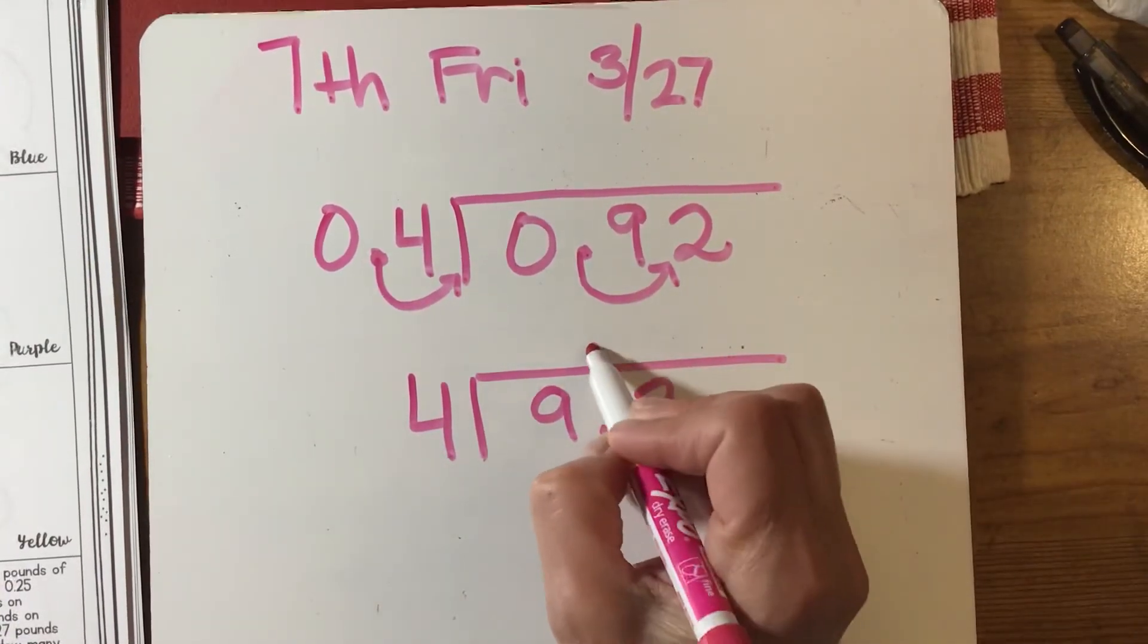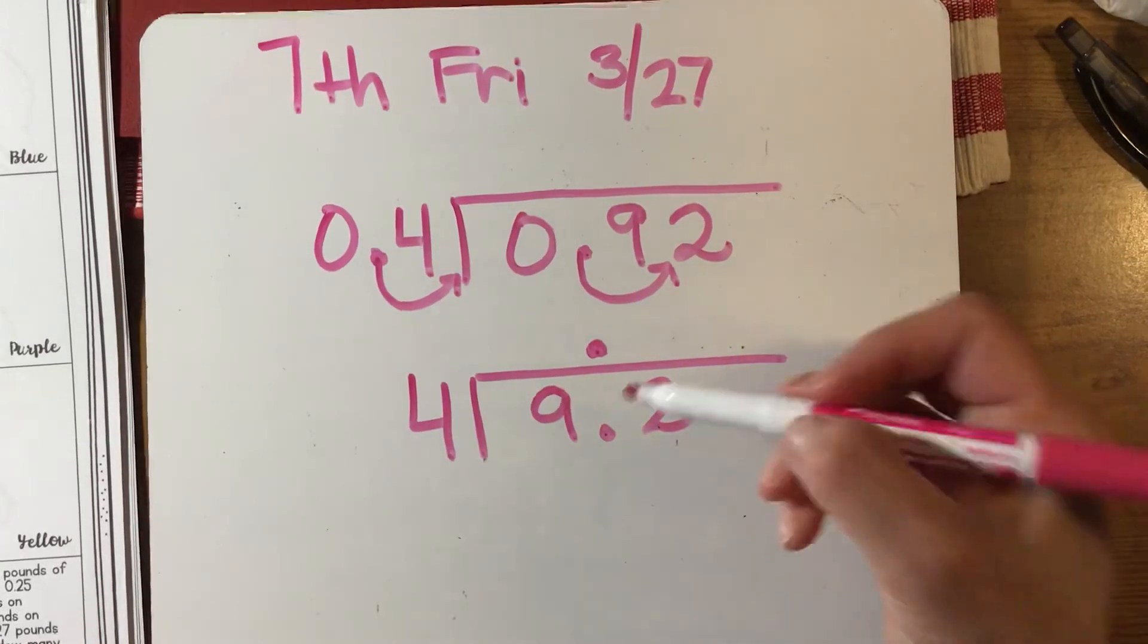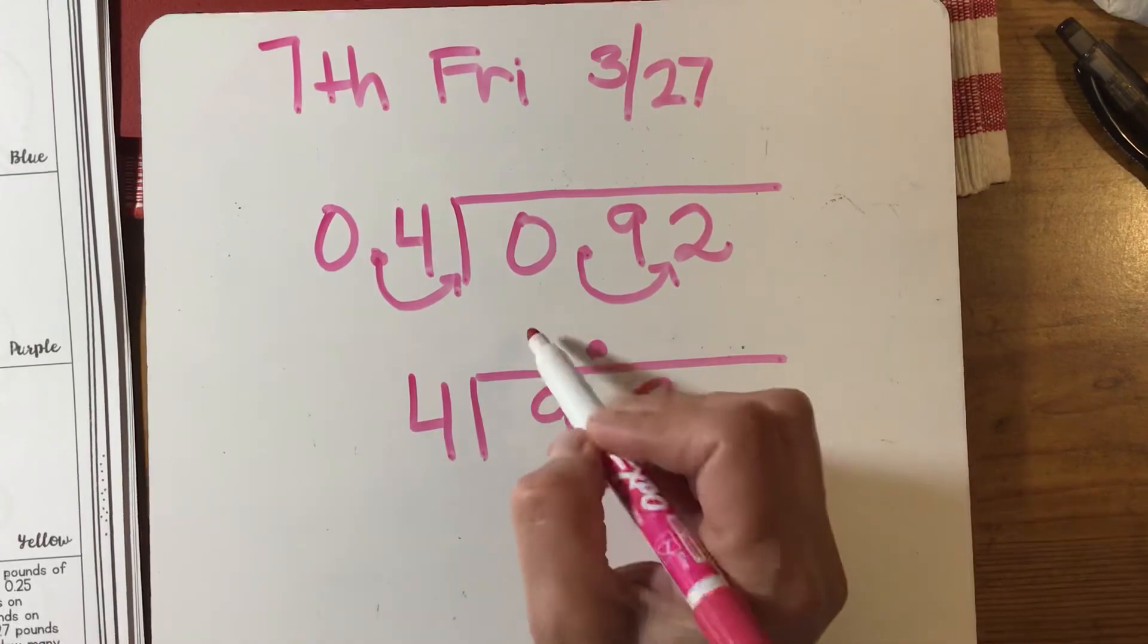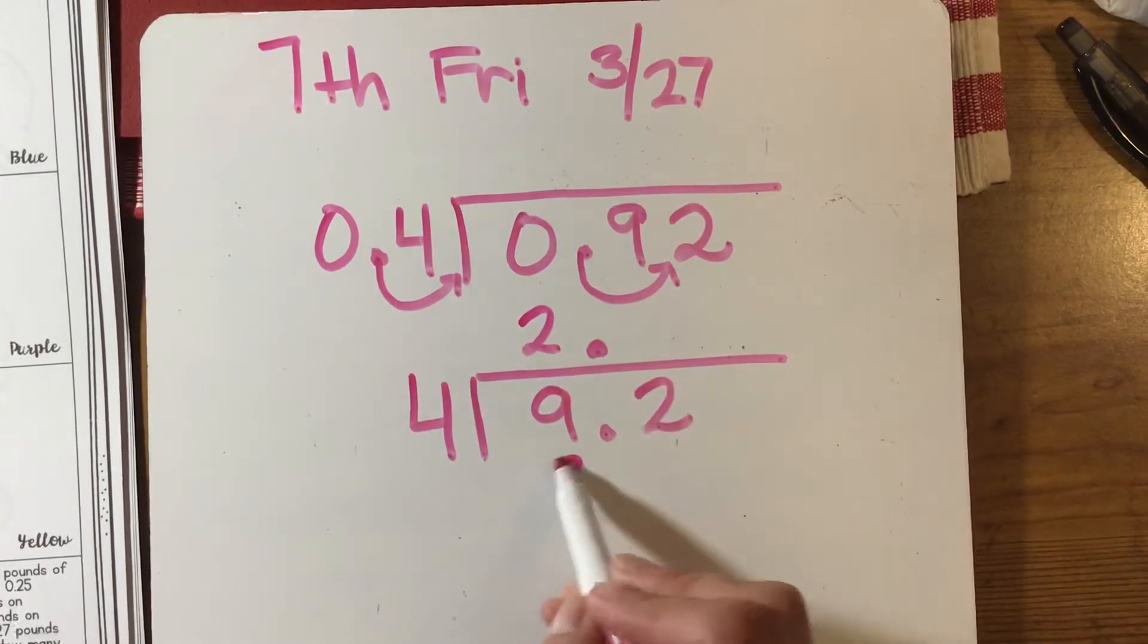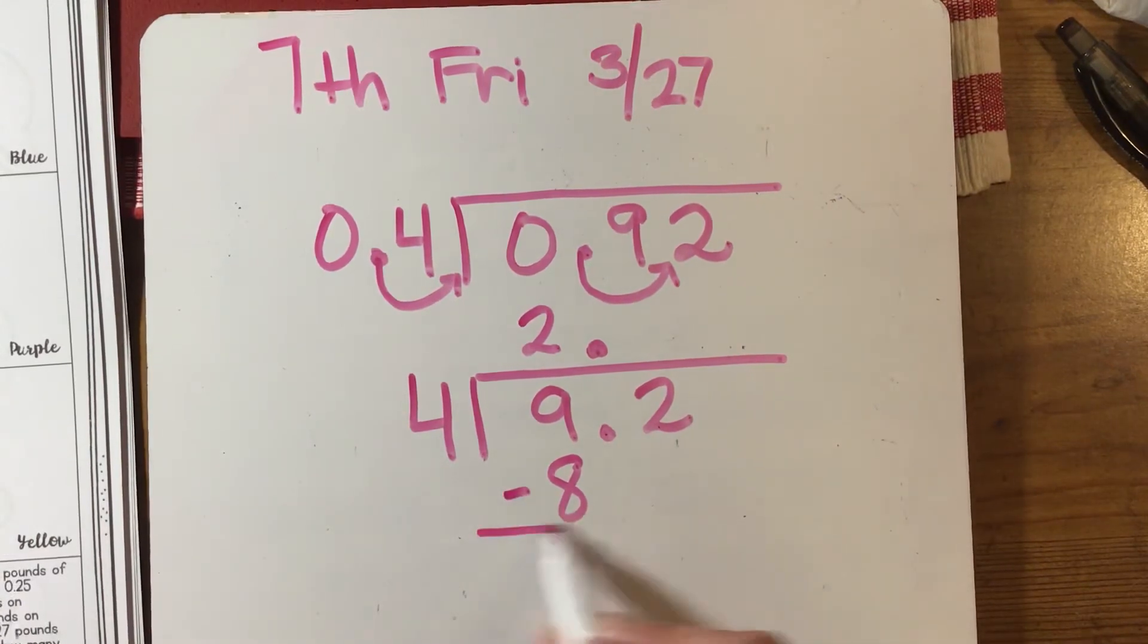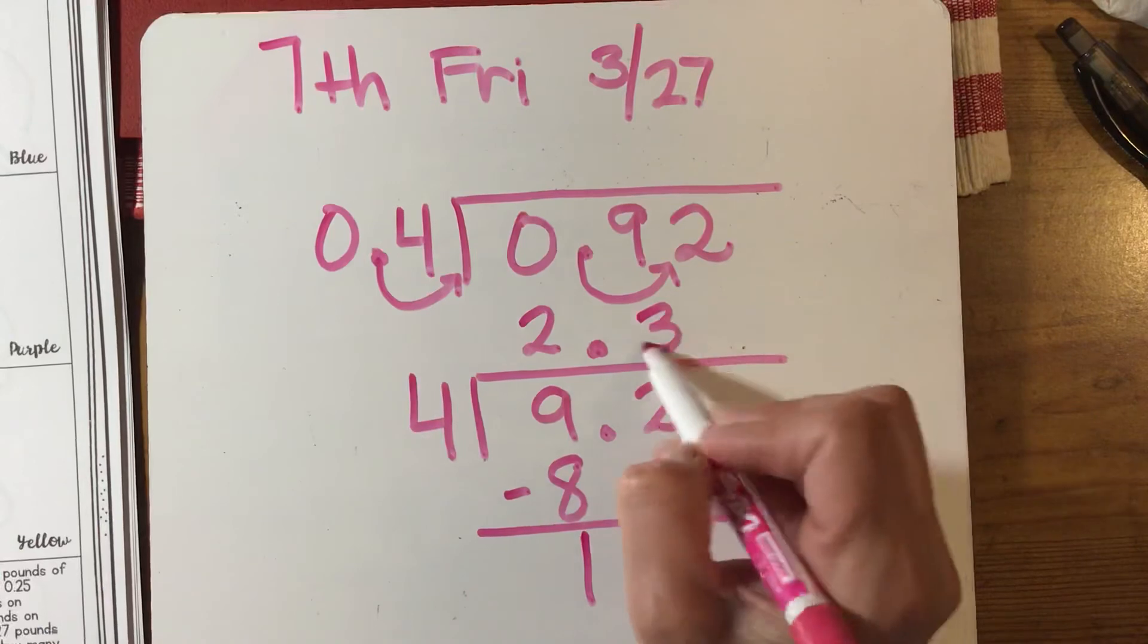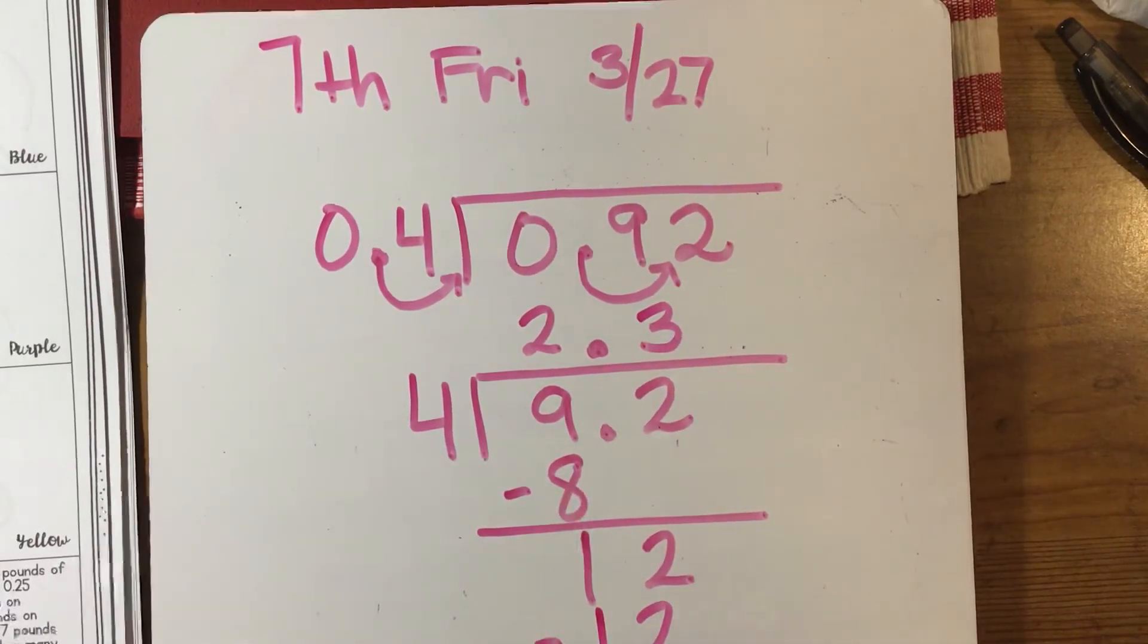You put it directly above wherever it is in your dividend. Four times two is eight. I'm pretending that decimal isn't even there—I'm just doing regular division. Nine take away eight is one. Bring down your two. Four times three is twelve, so you have a total of 2.3. So that's division. I am going to put a couple of word problems too, so I want you to make sure you're reading them very carefully.